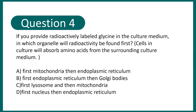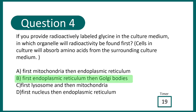Question 4: If you provide radioactively labeled glycine to the culture medium, in which organelle will radioactivity be seen first? Options include mitochondria, endoplasmic reticulum then Golgi, lysosome then mitochondria, or nucleus then ER. The correct answer is endoplasmic reticulum first and then Golgi. Check the cellular traffic video in the 'i' button for a quick revision.